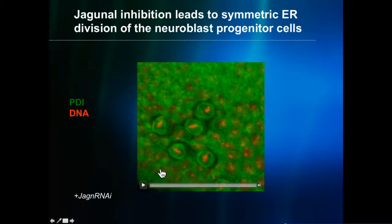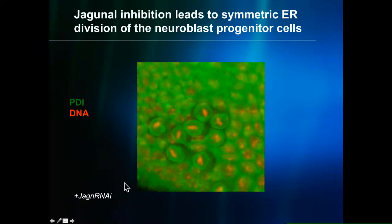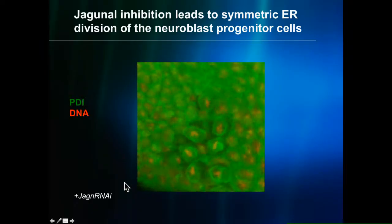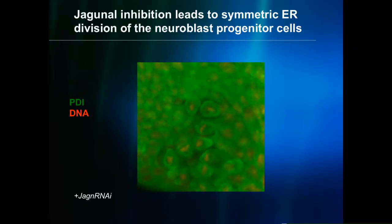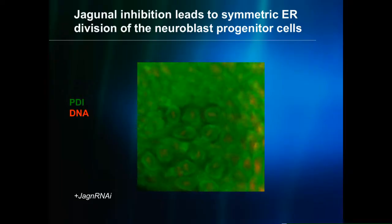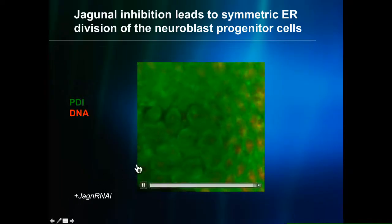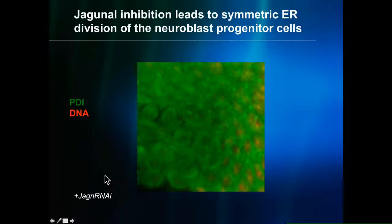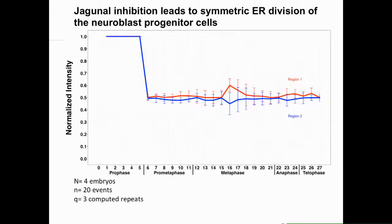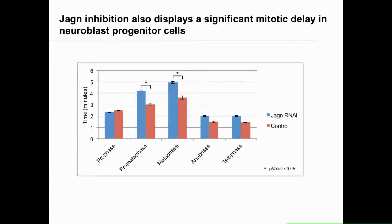When we knocked down Jaganol, we saw a couple of things. First, the ER now divides symmetrically. Secondly, there's a prolonged delay in mitosis — one cell tries to divide asymmetrically and then snaps back. We can now get a symmetrical partitioning of the ER and measure this with fluorescence intensity, confirming symmetrical partitioning. Measuring mitosis timing also shows a significant delay, notably from prometaphase to metaphase, where cells appear somewhat arrested before finally completing mitosis.